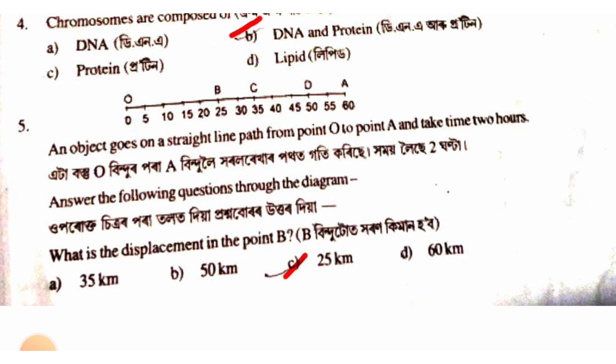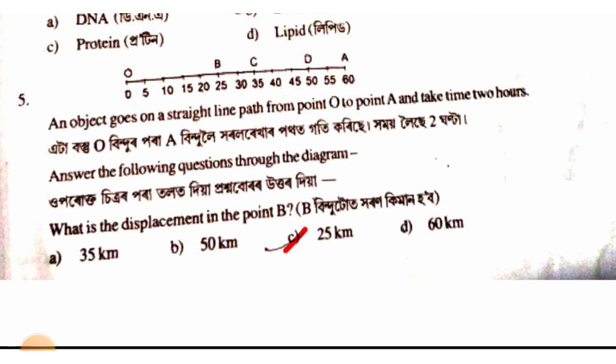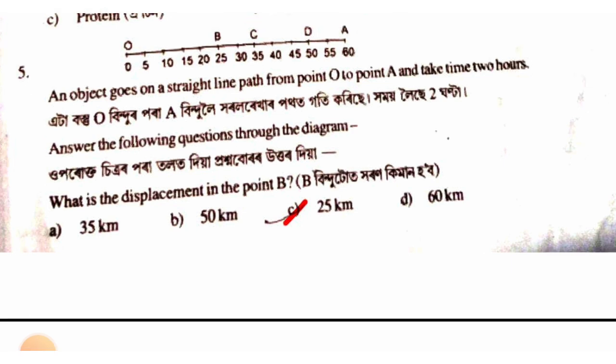An object goes on a straight line path from point O to point A and takes two hours. The answer is option C — 25 kilometers per hour.